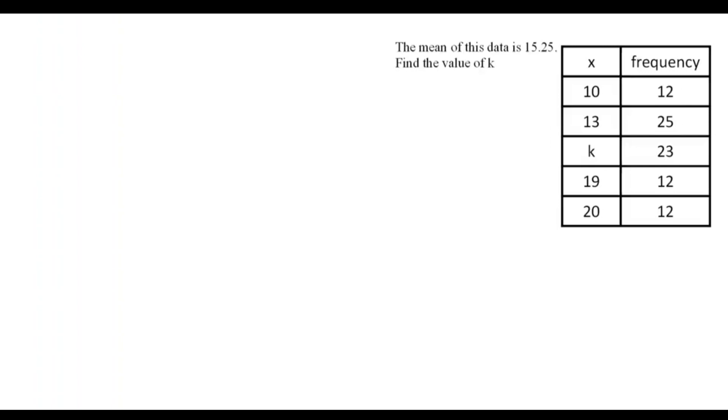In this question, we've been told that the mean of this data is 15.25. Usually, whenever we have a mean question with a frequency table, I'll ask you to put the data into your calculator as list one and list two and use whatever you get on the summary screen.